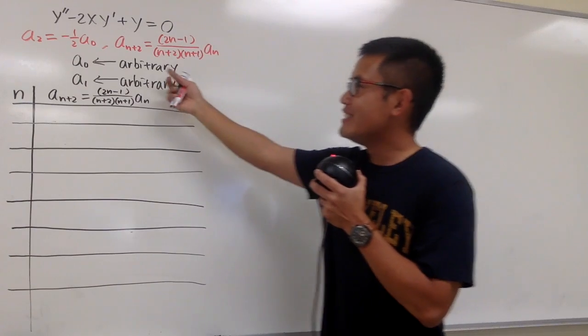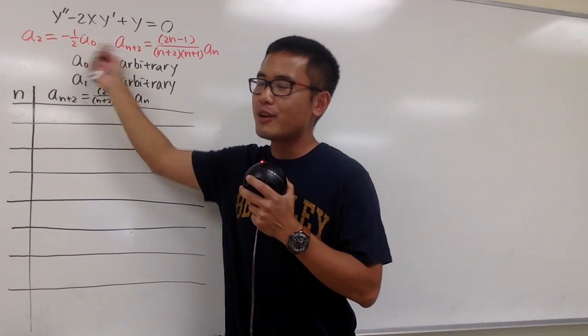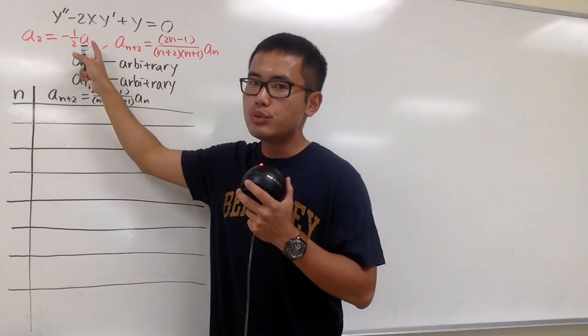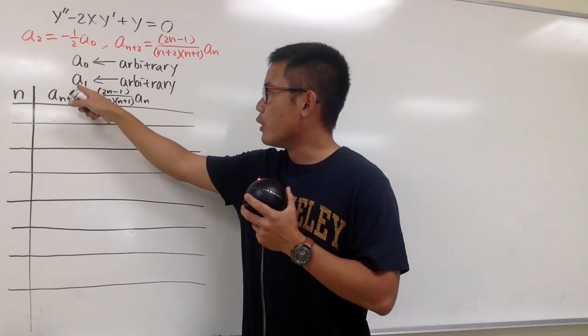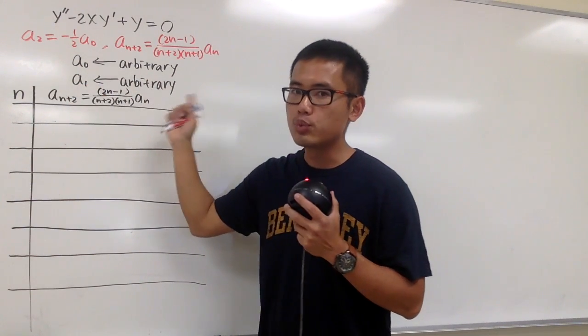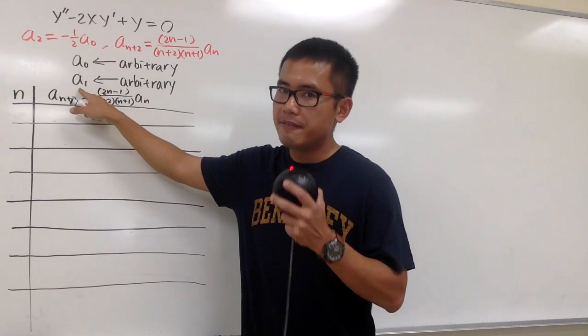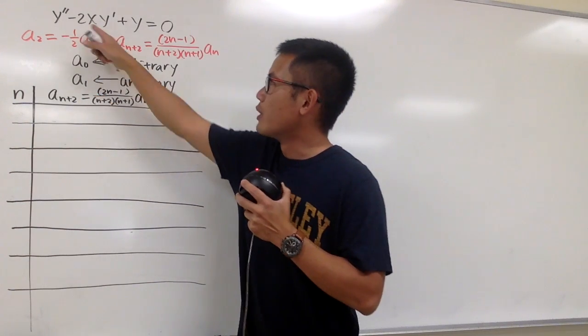So this is what we have. As you can see, I wrote down the formula that we got earlier right here. a2 is based on a0. We can say that a0 to be arbitrary. We will also say that a1 to be arbitrary as well. a0, a1, they are in fact our constants for our differential equation.